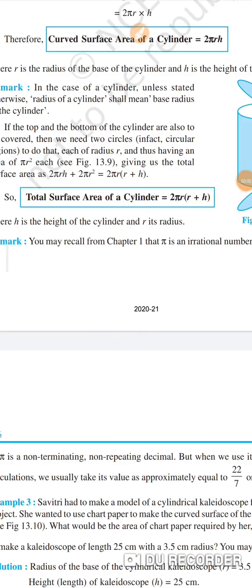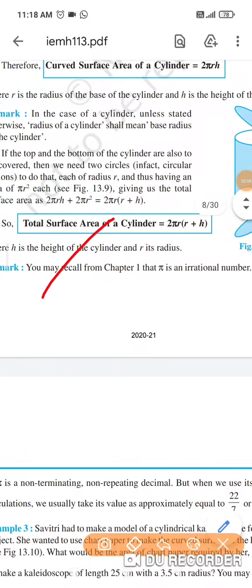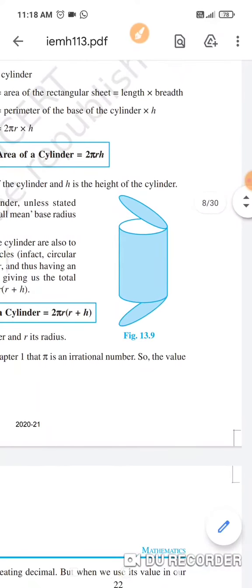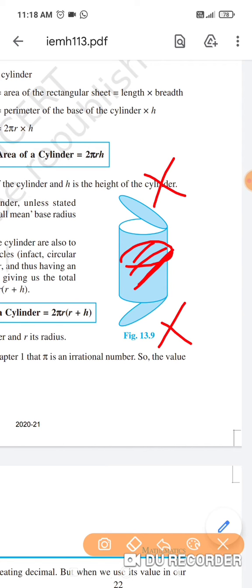Good morning students. Now next concept, that is total surface area of cylinder. We will take cylinder here, we will cover up the entire body, and we will add the top and bottom. Here we will add the area of circle.